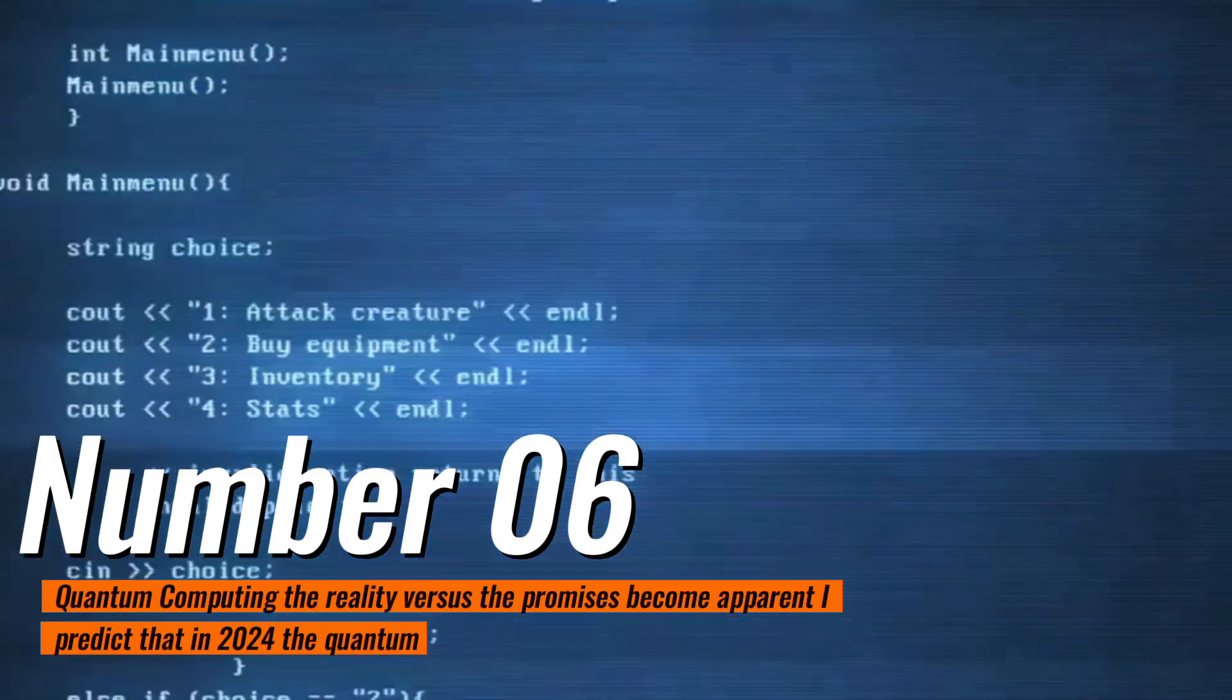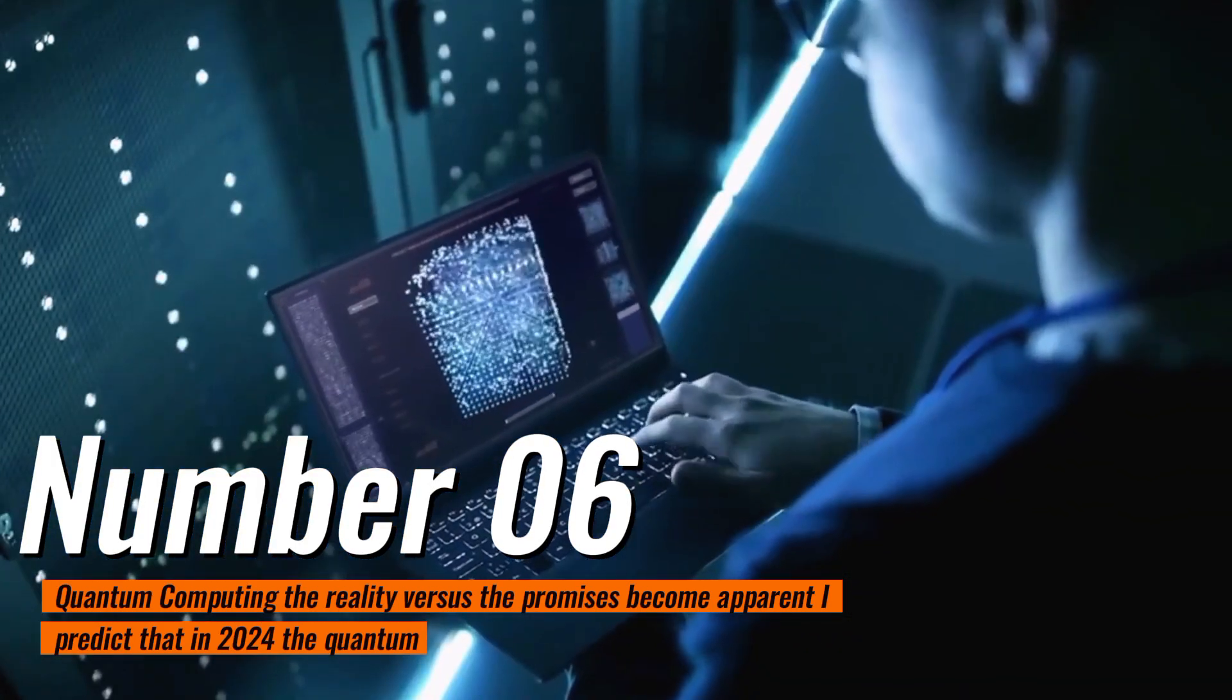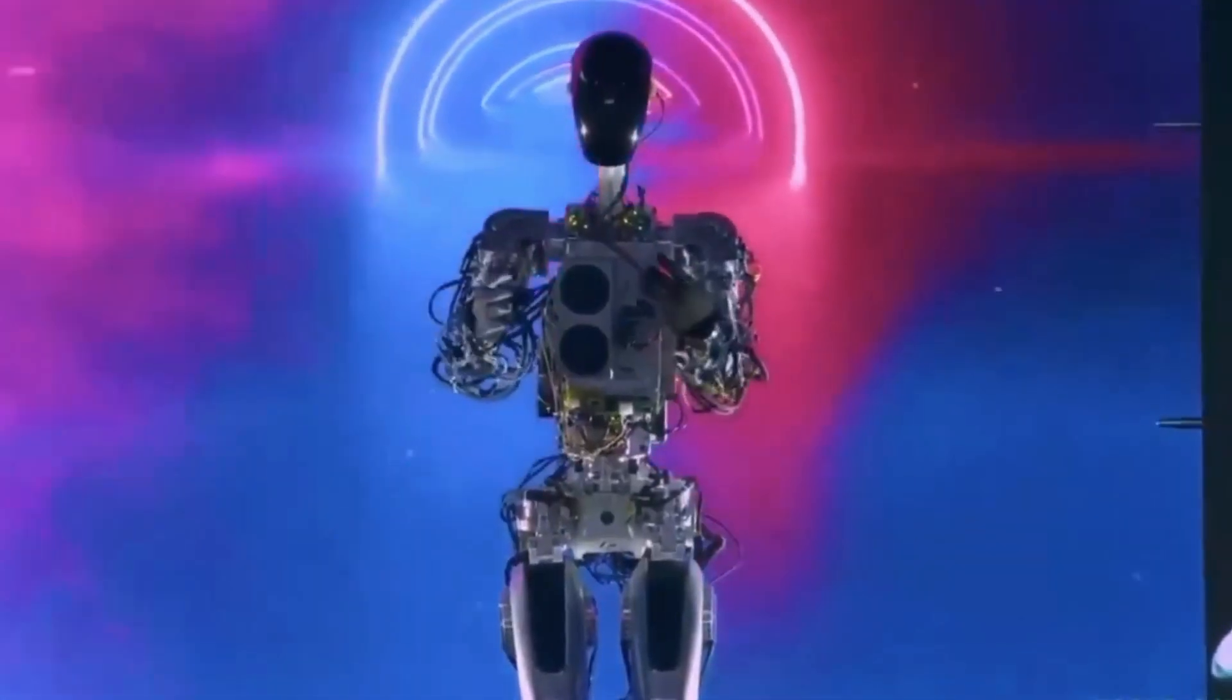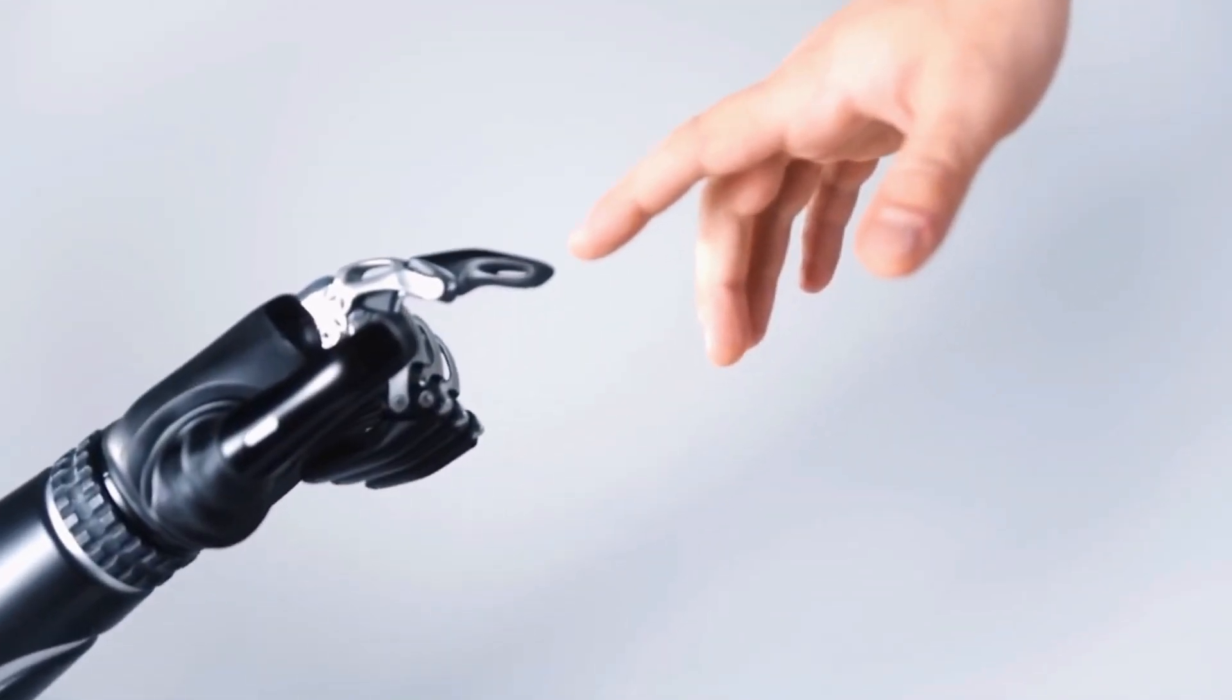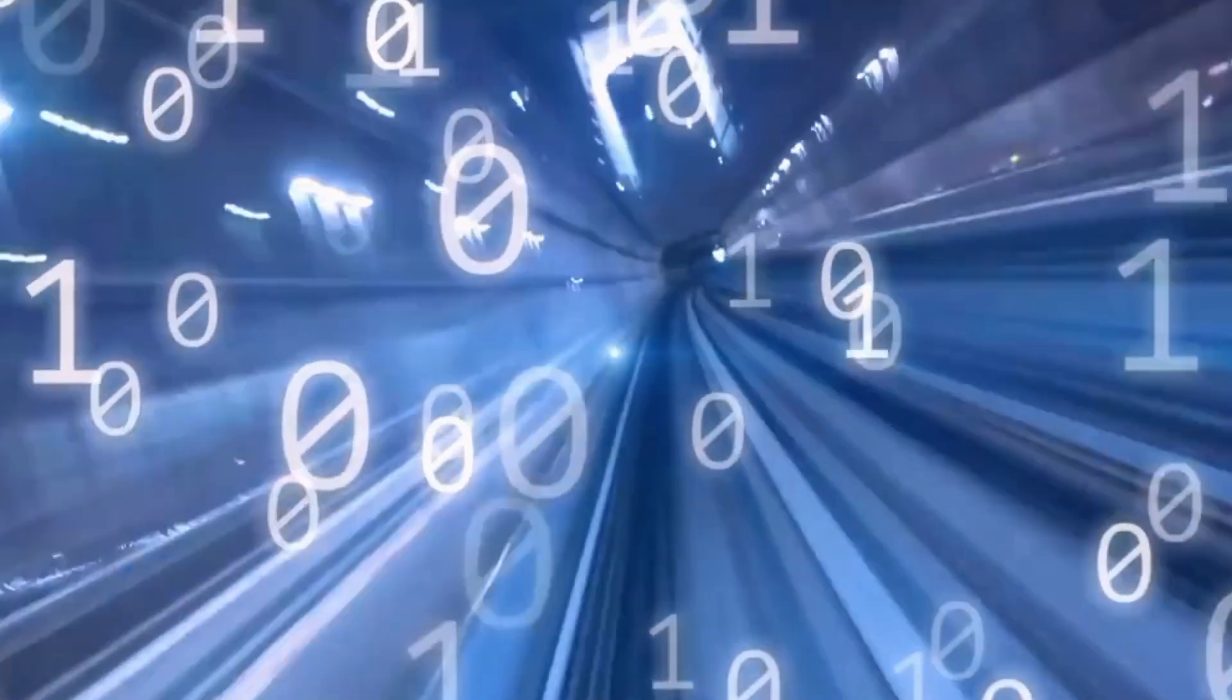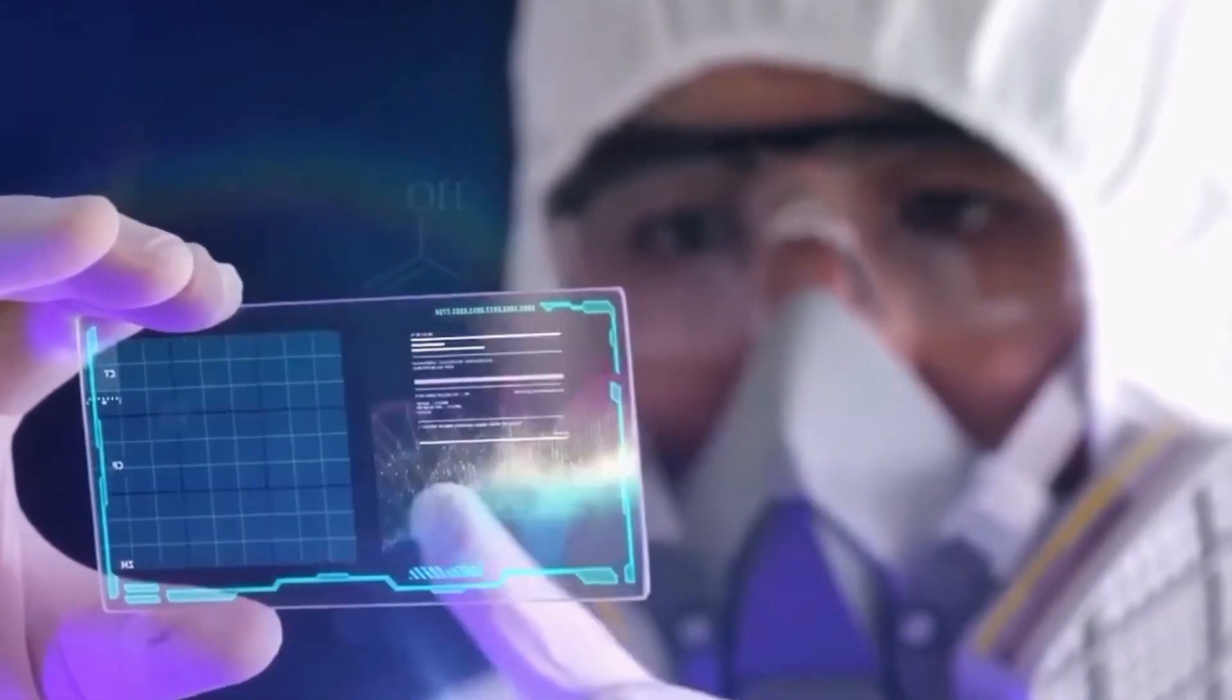Tech trend number six: quantum computing, the reality versus the promises become apparent. I predict that in 2024 the quantum computing stuff will still be for the nerds. Artificial intelligence will give us exponential growth in science, but the error correction problems are still not well defined and the physical problems of keeping everything coherent and cold, it's just going to take longer than 2024.